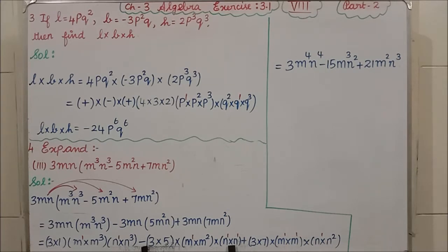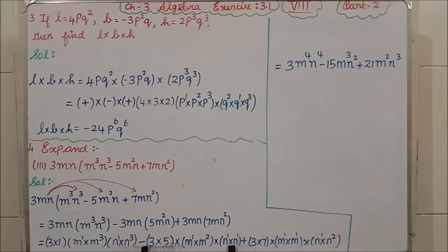Monomial has only one term. Binomial has two terms. Trinomial has three terms. Polynomial has two or more algebraic terms — more than three terms we call polynomial. We have also learnt about multiplication of algebraic expressions, including like sign and unlike sign. Now we will continue exercise 3.1 from the third question, covering monomial into monomial, monomial into binomial, and monomial into trinomial.